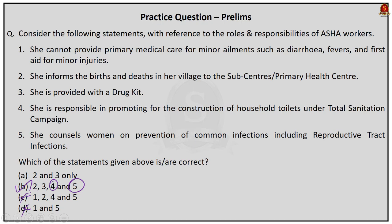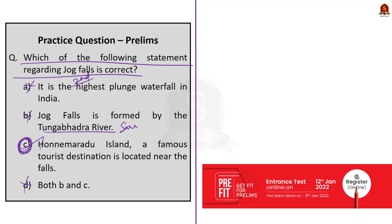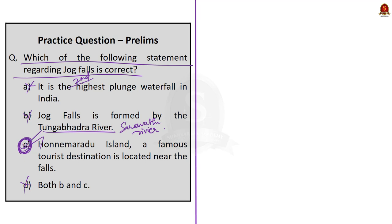Question 4 asks which statement about Jog Falls is correct. Option A — it is the highest plunge waterfall in India. Option B — Jog Falls is formed by the Tungabhadra River. Option C — Honnemaradu Island, a famous tourist destination, is located near the falls. Option D — both B and C. The correct answer is option C. Jog Falls is the second highest plunge waterfall, not the first, and it is formed by the Sharavathi River, not the Tungabhadra.